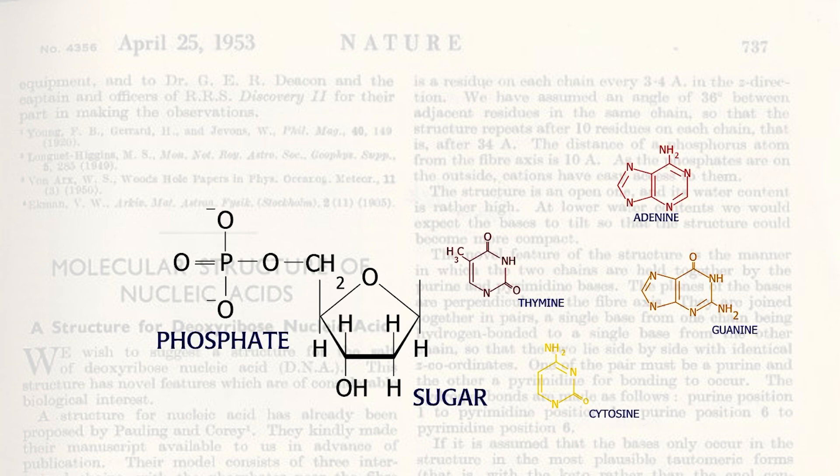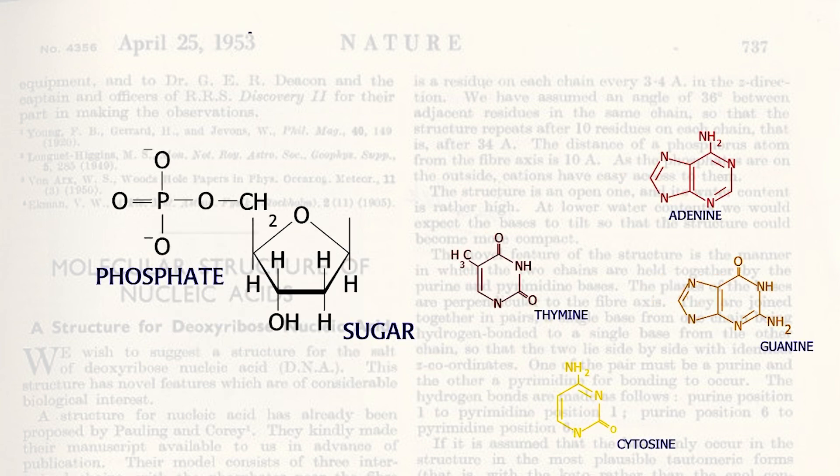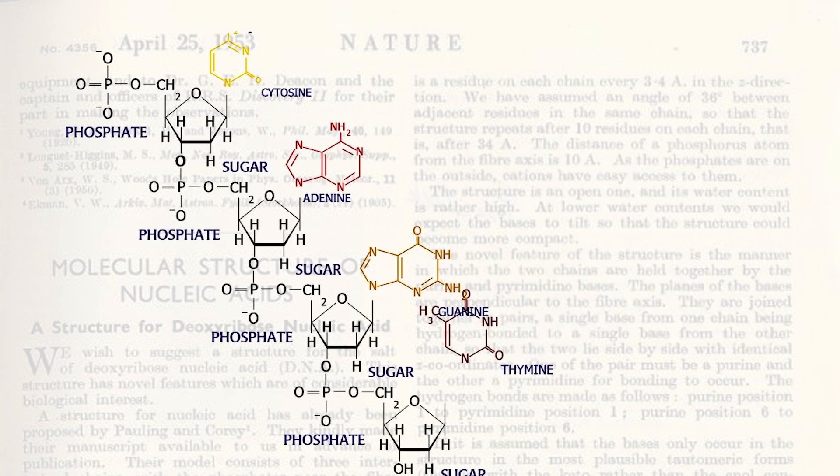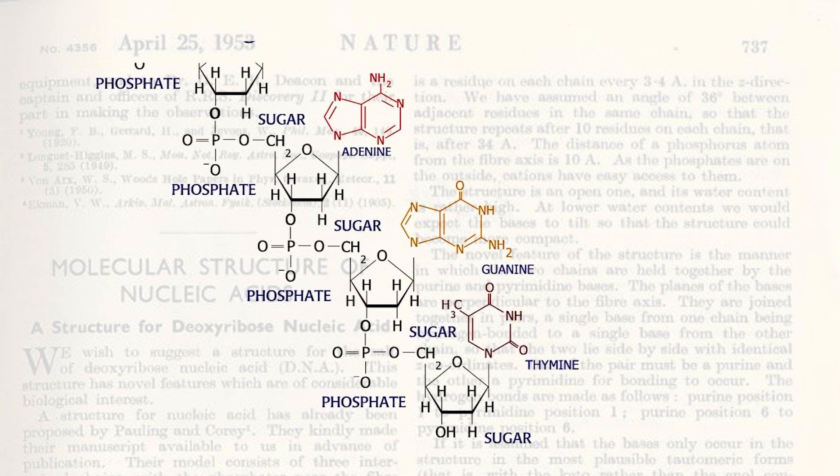Nucleotides are linked in a series from one phosphate to the next sugar to the next phosphate and so on. After Oswald Avery's landmark paper, James Watson and Francis Crick knew that DNA had to be intelligent. In fact, it made more sense if the order of the nucleotides changed.